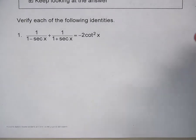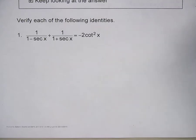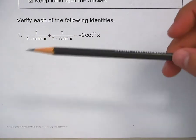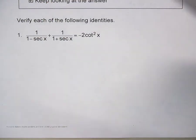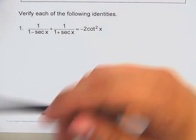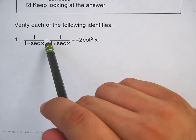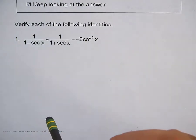Number one: 1 over secant x plus 1 over 1 plus secant x equals negative 2 cotangent squared x. It's not squared, so I can't substitute anything in there. Following the checklist, I'm going to work with the more complex side — the left side — because it looks a lot more difficult than just the right side.